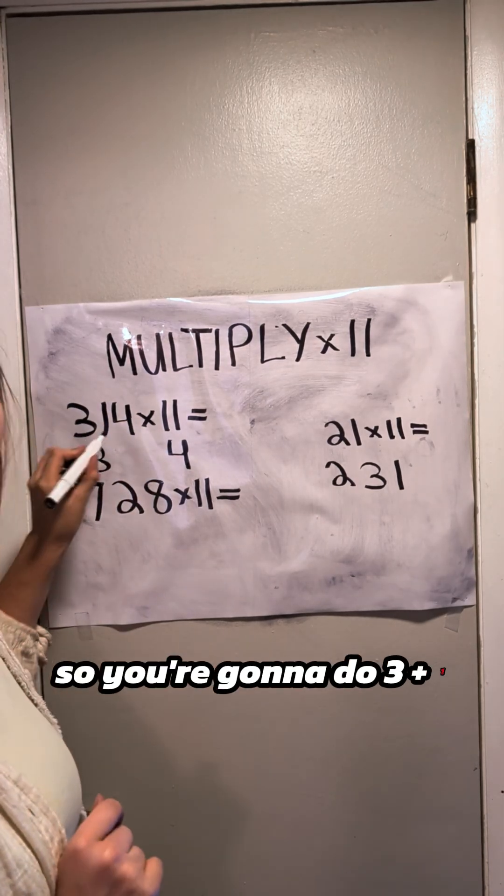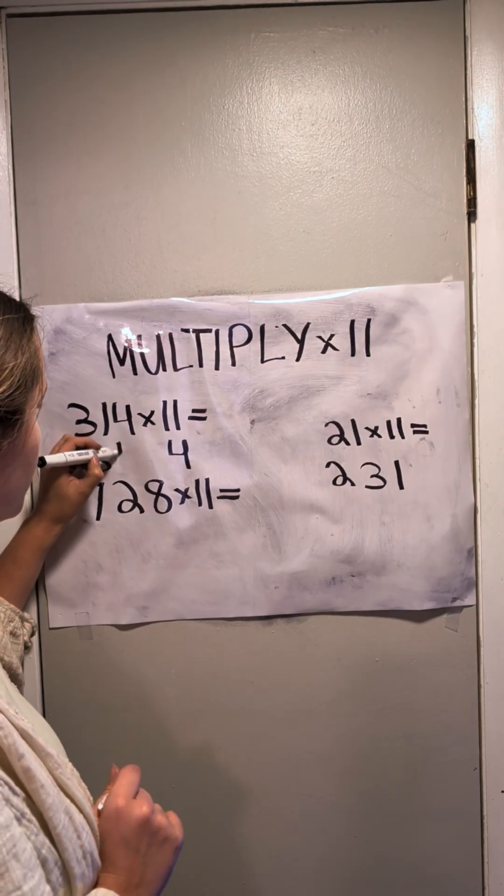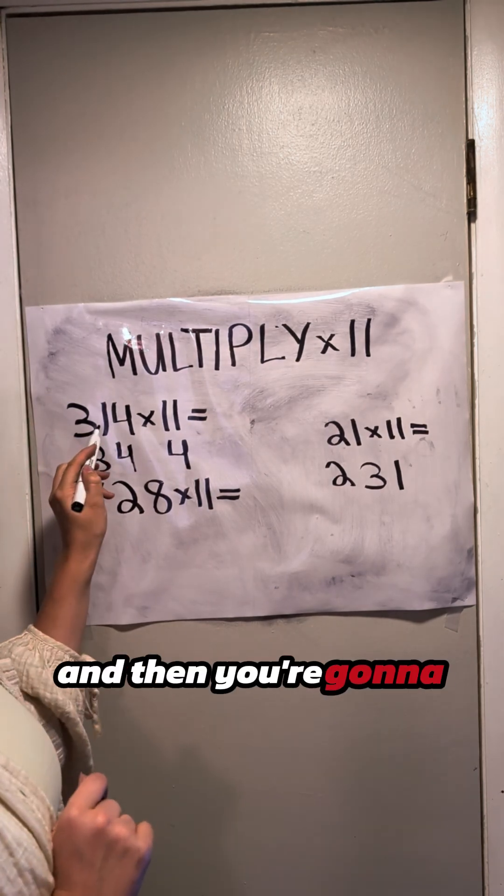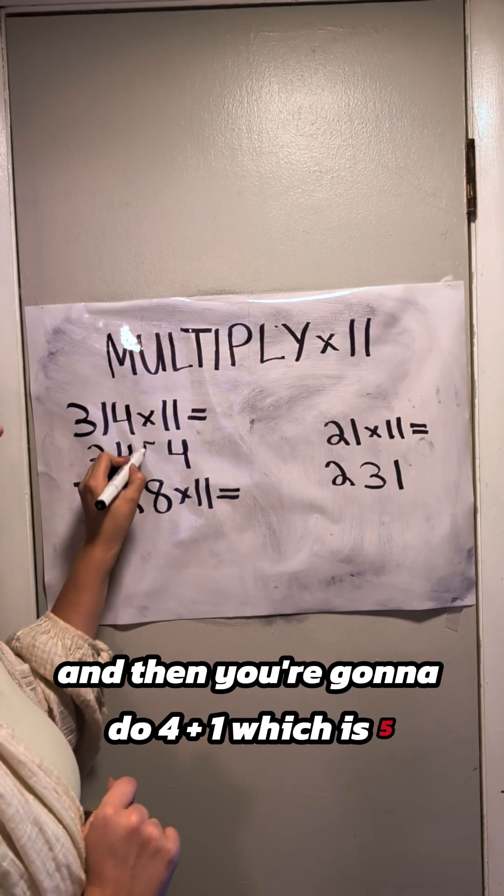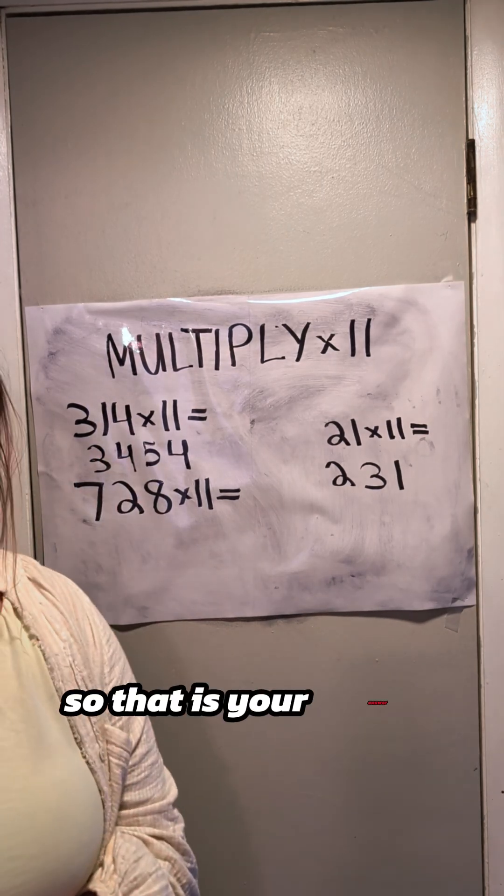So you're going to do 3 plus 1, which is 4, and then you're going to do 4 plus 1, which is 5. So that is your answer.